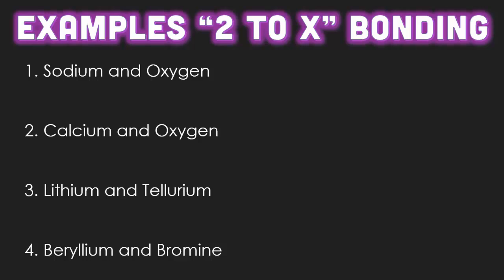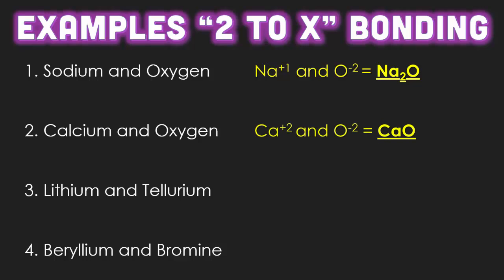Here are some examples. Sodium and oxygen: sodium has a positive one charge and oxygen has a negative two charge — taken straight from the reference tables. You end up needing two positive ones to balance out the negative two, which is why it comes out to a two-to-one ratio of Na to oxygen, giving Na₂O. For calcium and oxygen, calcium has a positive two charge and oxygen has a negative two charge. Since positive two and negative two already balance each other out, we have a one-to-one ratio.